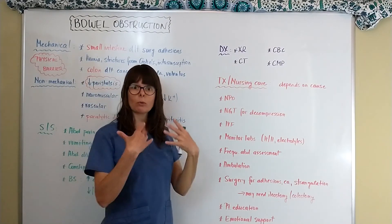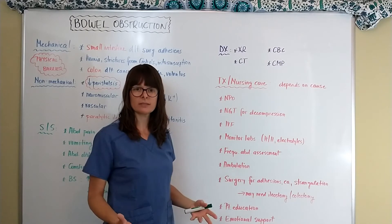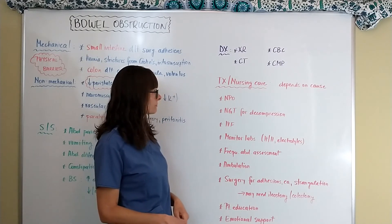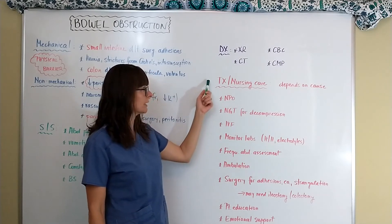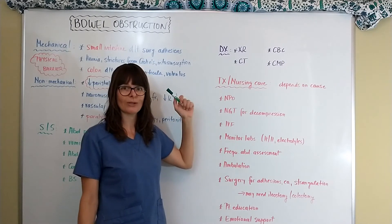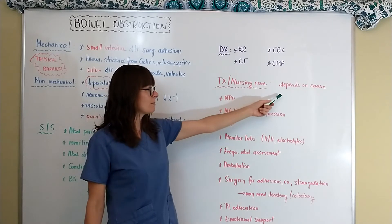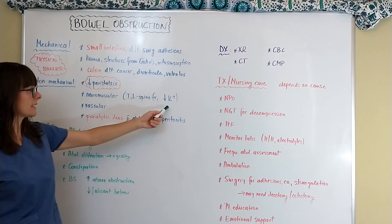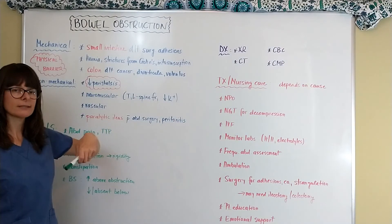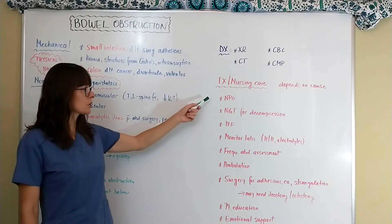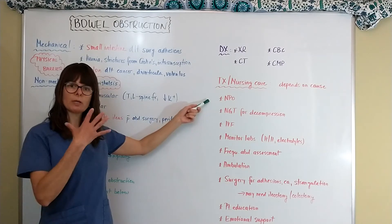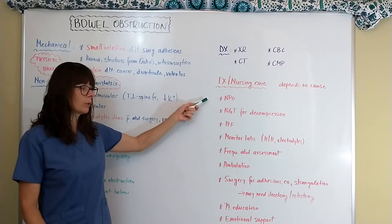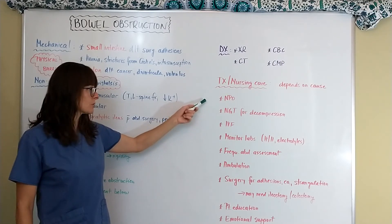Because the patient is vomiting a great deal, they are losing a lot of acid, which can lead to metabolic alkalosis. Nursing care and treatment depend on the cause — whether mechanical or non-mechanical. If the cause is hypokalemia, that must be treated. The patient will definitely need to be NPO, since nothing is moving downward through the digestive tract and we don't want to add more into the system.